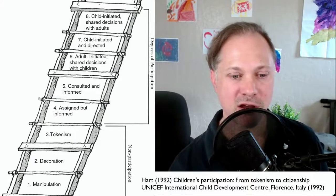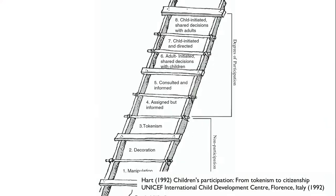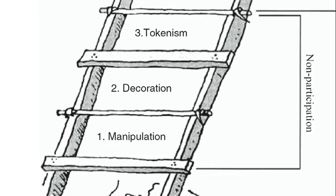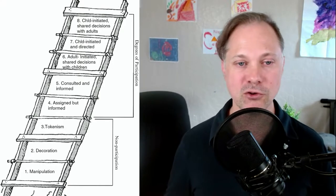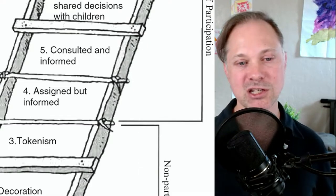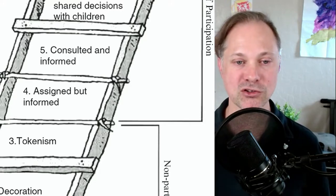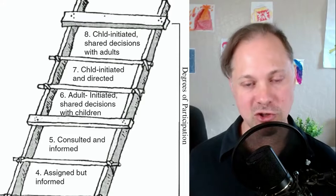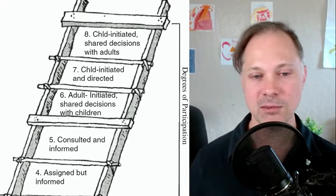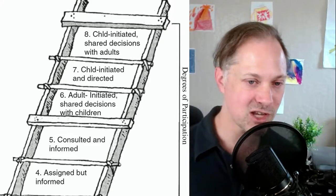This first model we'll look at is Hart's Ladder of Participation. On the bottom rungs you have non-participation, and on the top rungs you have degrees of participation. On the bottom: manipulation, decoration, and tokenism. Most people in music education seem to start with the idea of 'assigned but informed,' where teachers say 'this is what you're going to do' — and then move up the ladder. Moving further up, you might be 'consulted' — for example, asking students what music they want to play — but the adult is still making the final decision.